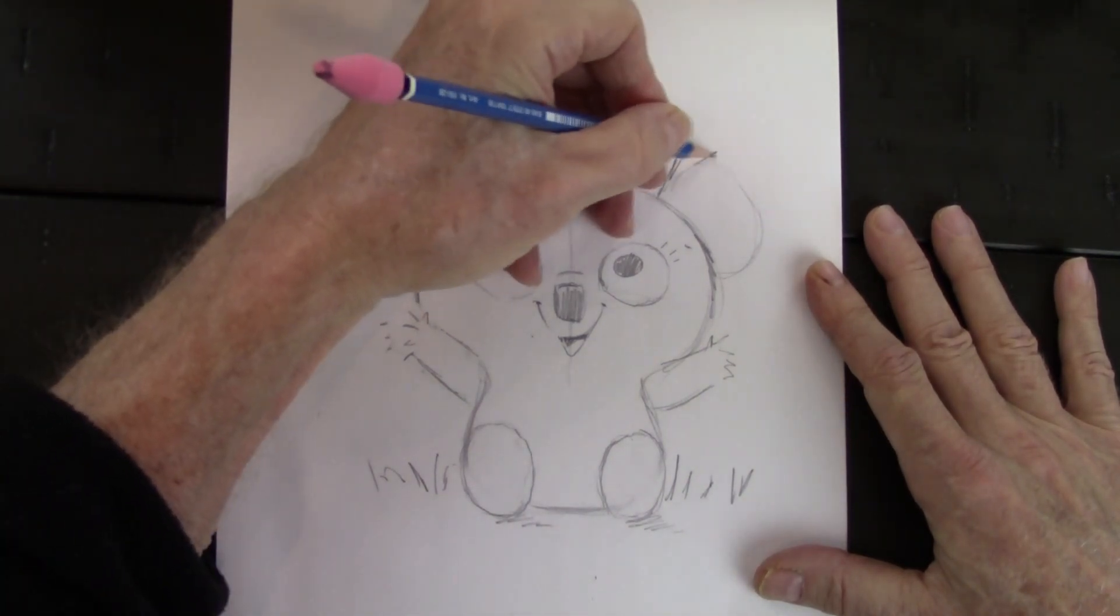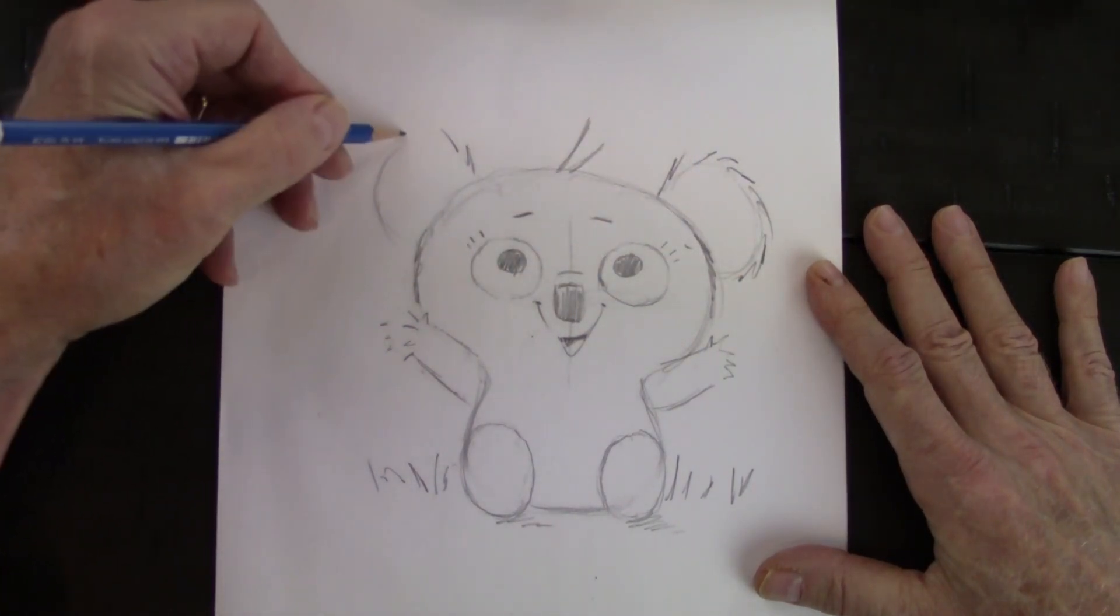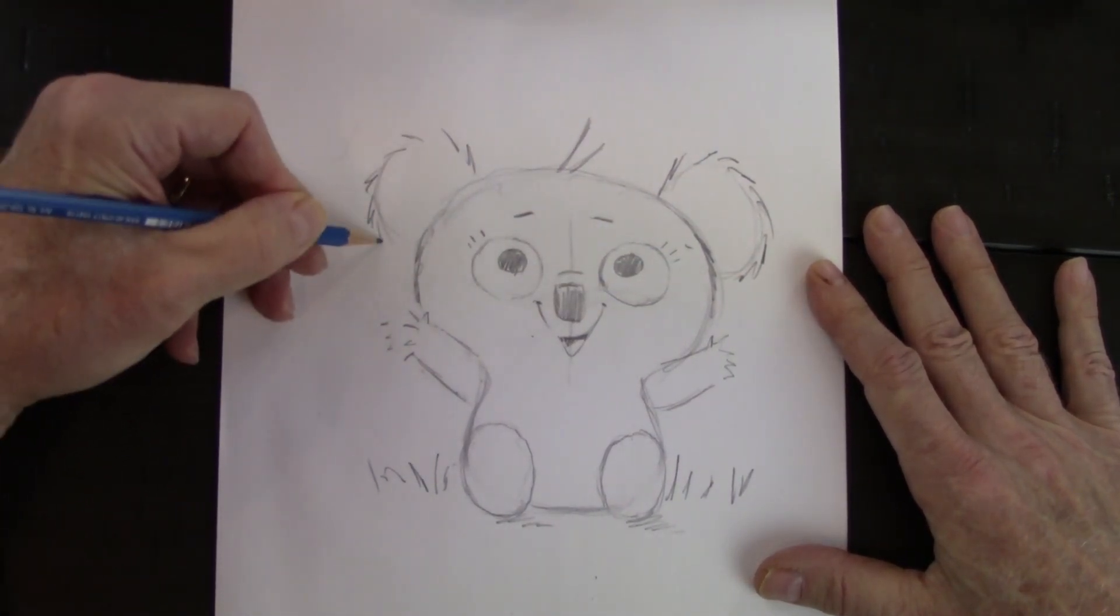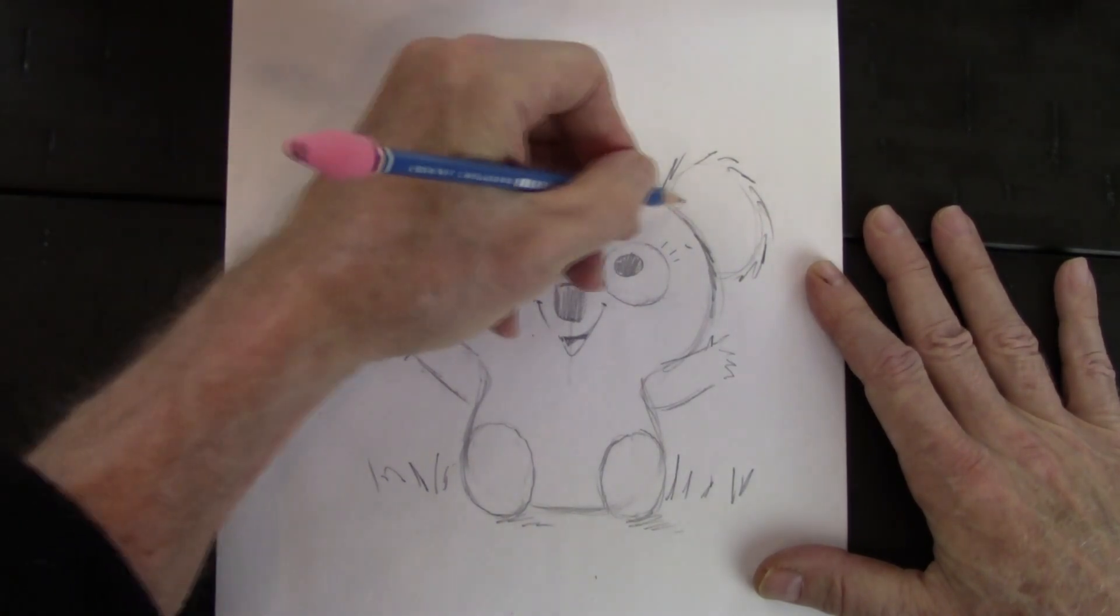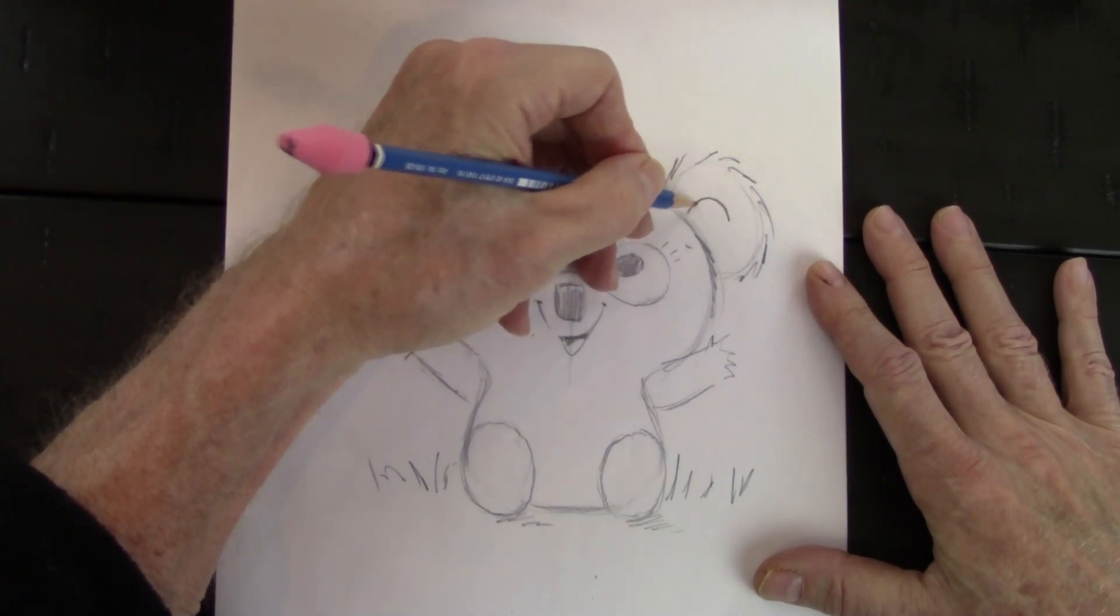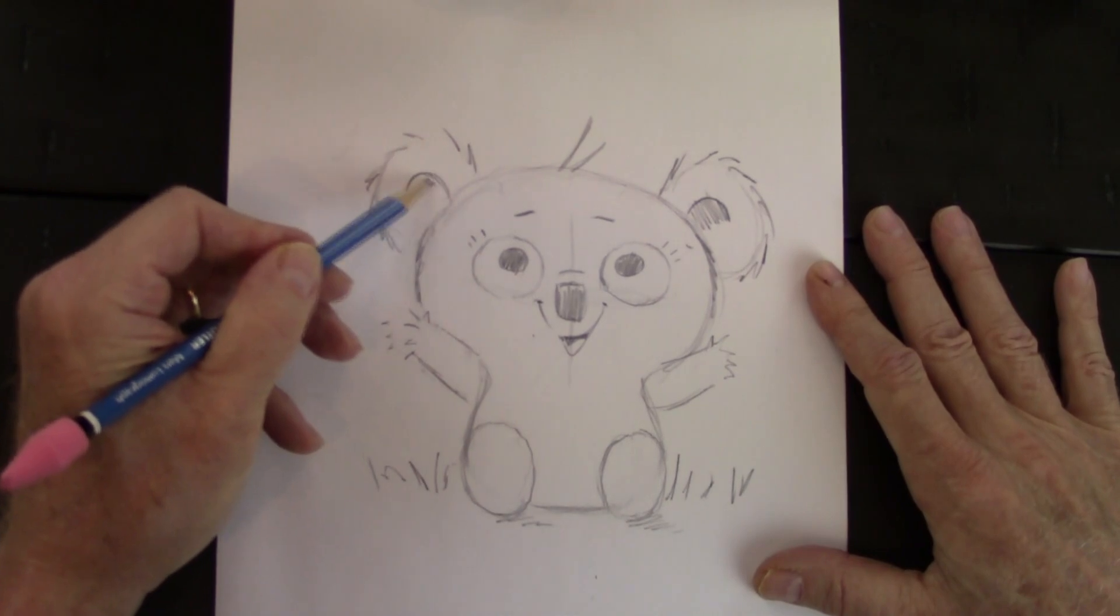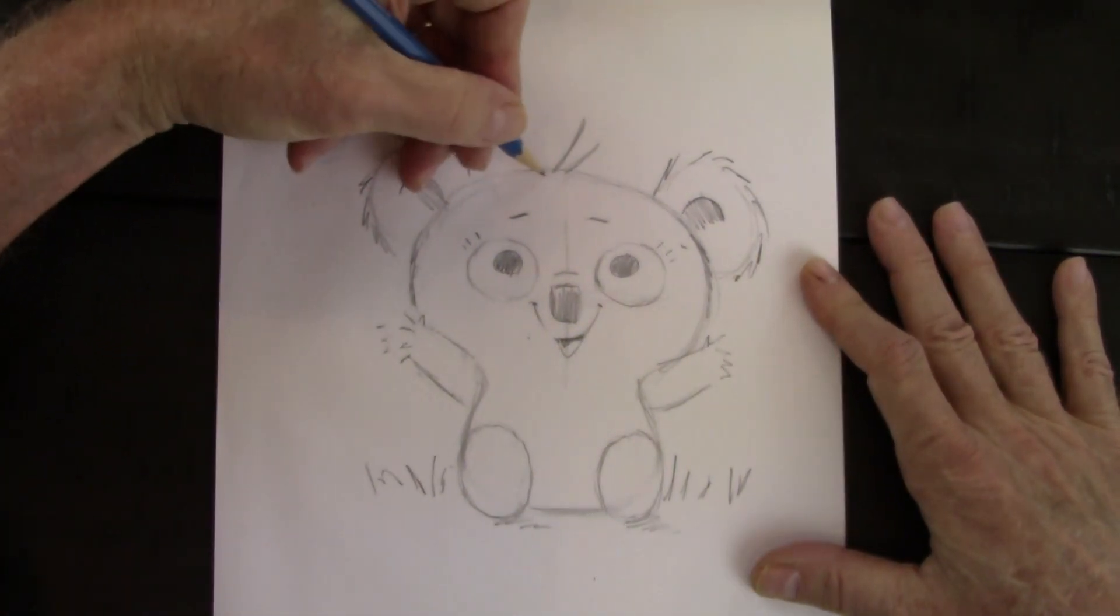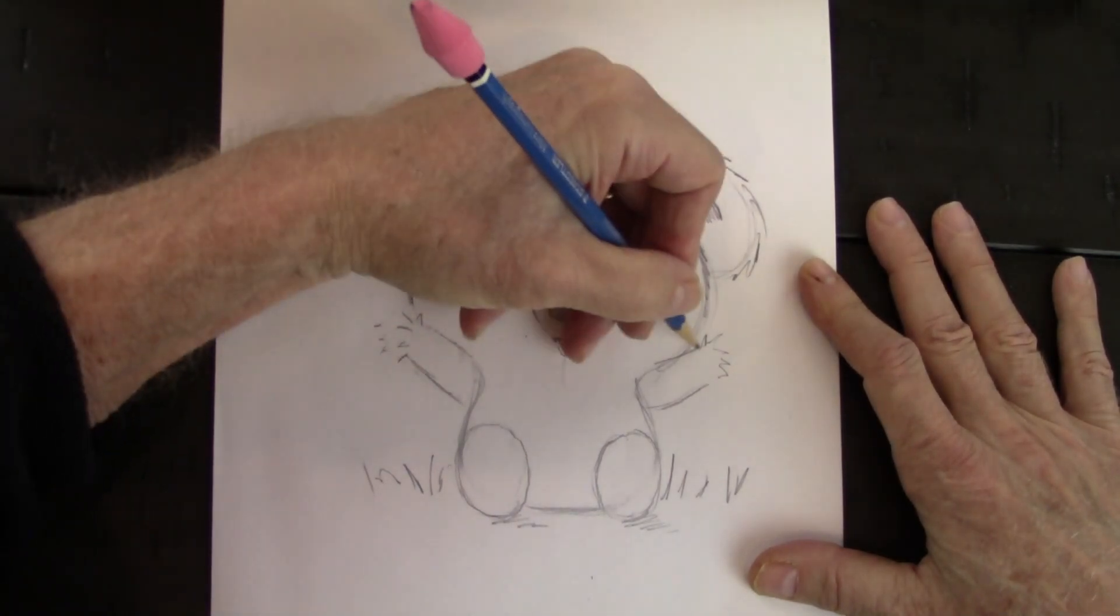And now let's put those really fuzzy ears. That's part of the landmark trait of this character. The partial circle, interior circle, partial interior circle. And a little bit of shading. Same thing on this side. And now let's just make it go a little darker here.